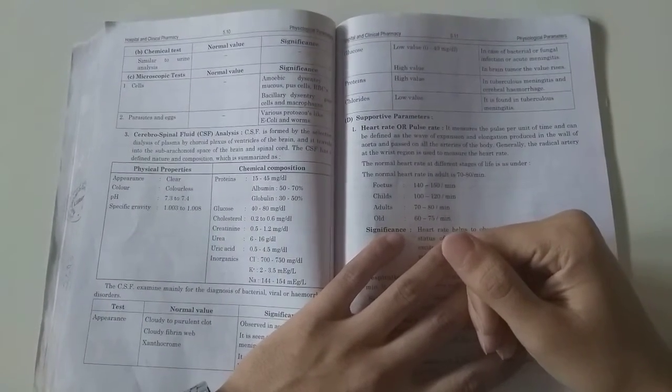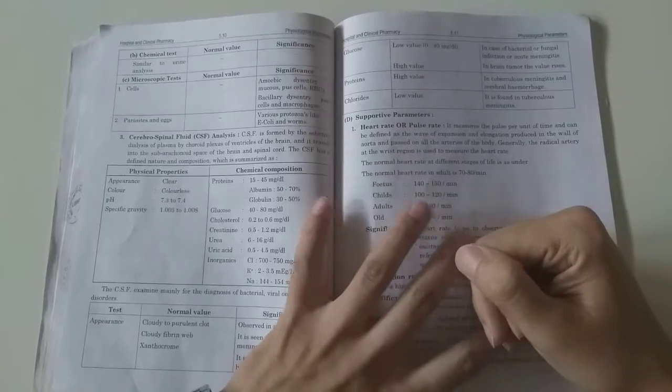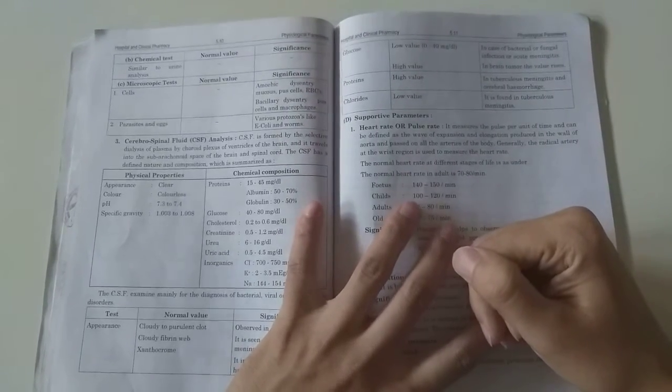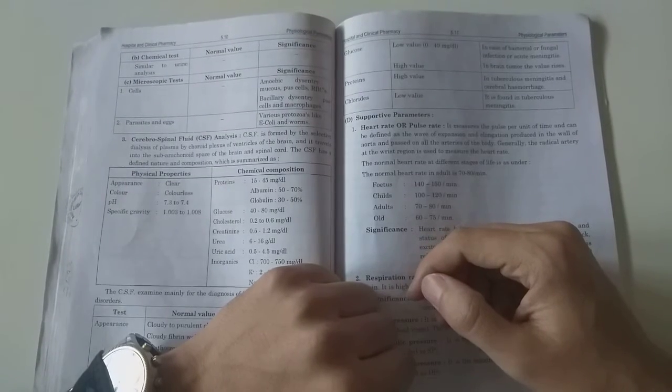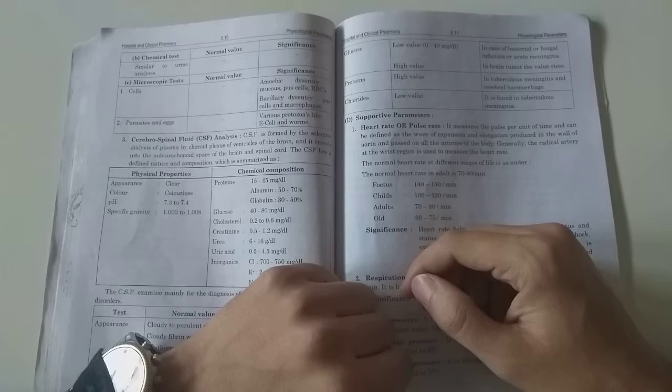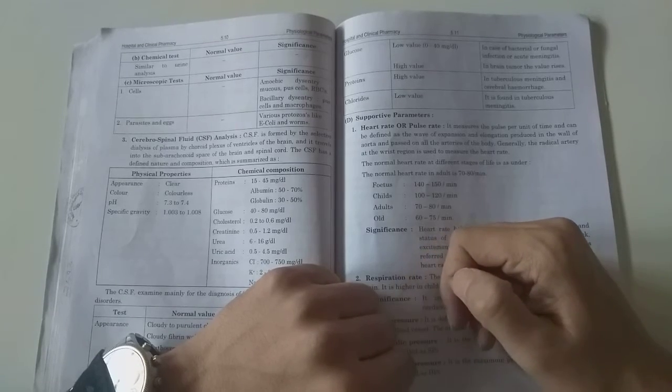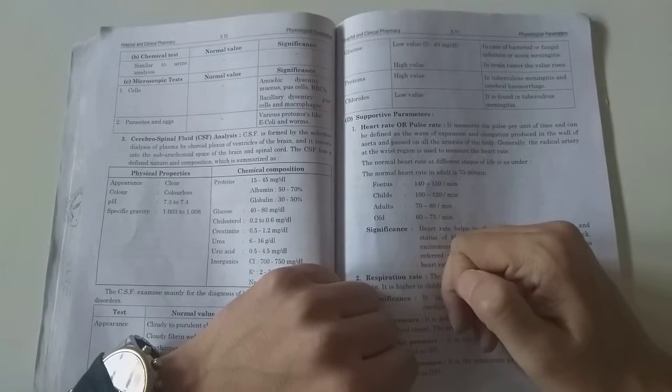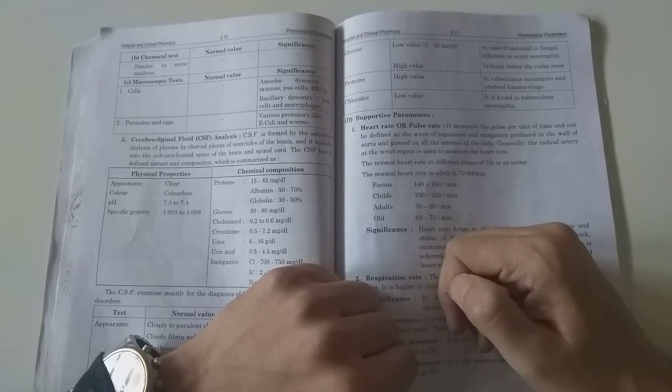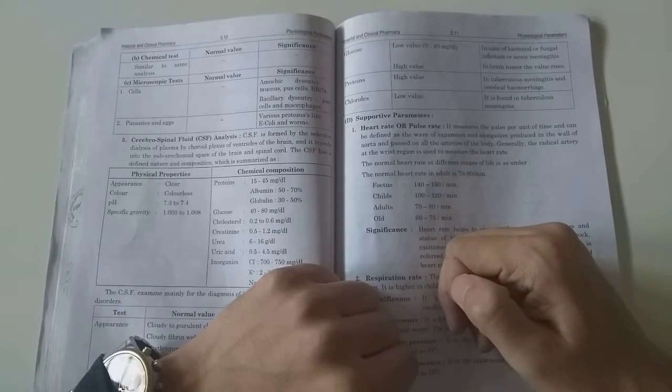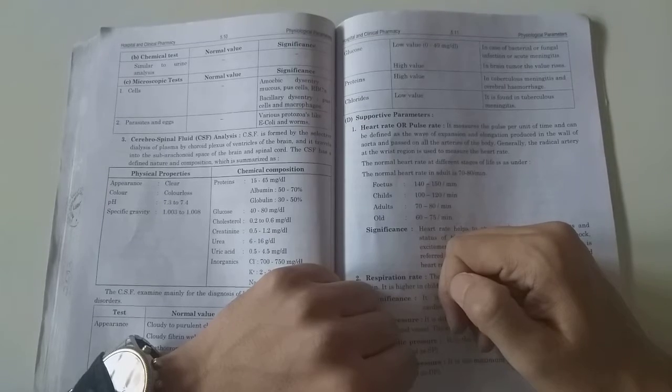Cerebrospinal Fluid or CSF is formed by the selective dialysis of plasma by the choroid plexus of the ventricles of the brain, and it is traveled into the subarachnoid space of the brain and the spinal cord. It is formed in the brain and transferred to the spinal cord.